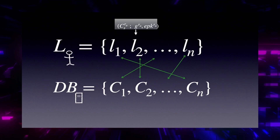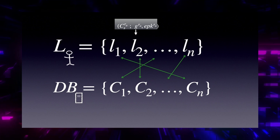Therefore, we have a list associated with the parties where each element includes a randomized pseudonym, randomized indicator, and randomized public key. We also have a database associated with the data that includes all the commitments to the data. We then assign the elements of this list and the database using a public random beacon, and the allocation is done. Now we have an allocation between parties and data.